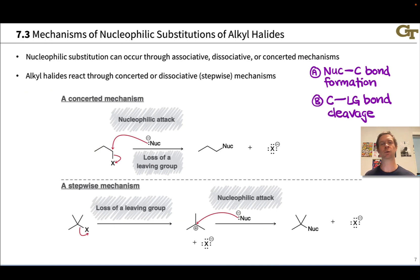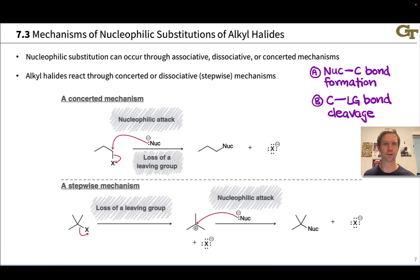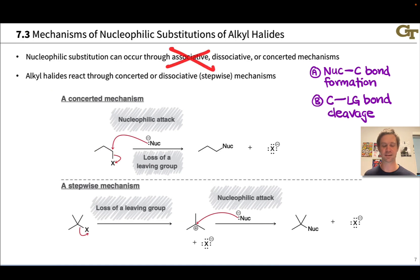Most generally, we could imagine this reaction going through three different mechanisms: associative, dissociative, or concerted. The associative mechanism at carbon does not occur. This would involve nucleophile-carbon bond formation before the leaving group departs, but this would violate the octet rule — if the nucleophile just coordinated to the carbon, that would produce a carbon with 10 total electrons. So violating the octet rule means this is not observed.